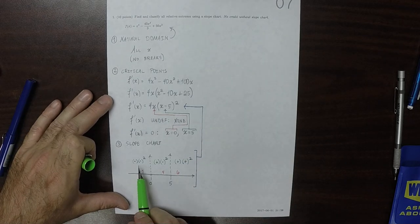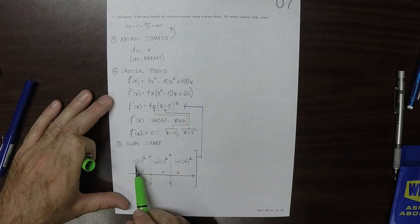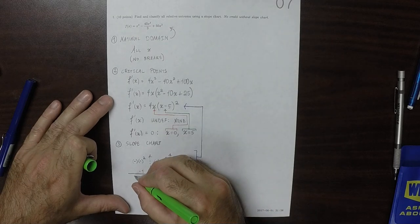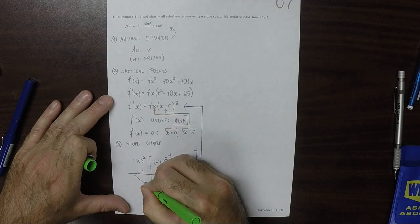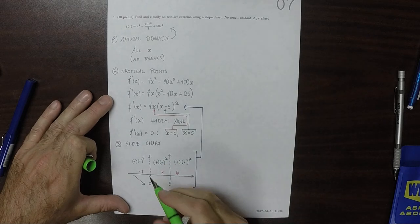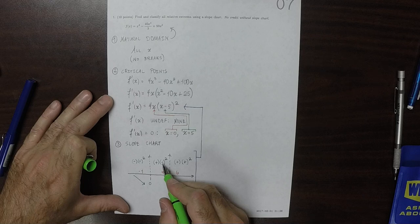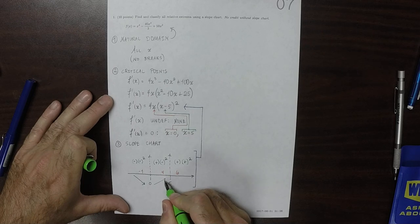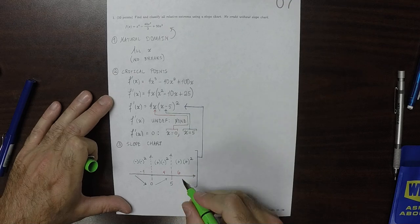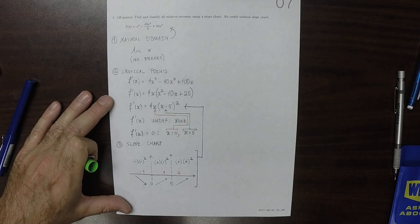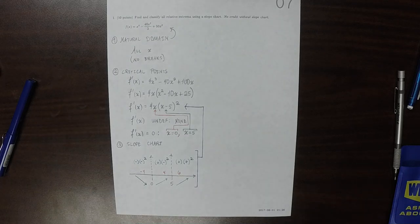So for this, the overall sign is negative, because there's 1, 2, 3 negatives. And because this is a slope chart, we'll indicate that negativeness with negative slope. Then this is positive slope, because there's two negatives, an even number of negatives. And then this is, again, positive, because everything is positive. So that's the slope chart.